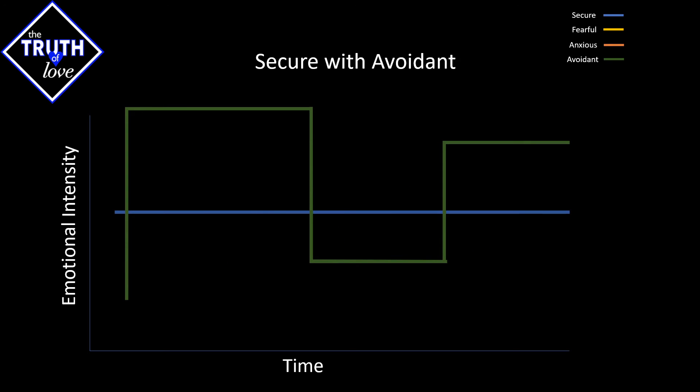Dismissive avoidance also follow a similar pattern, but like their counterparts or unlike their counterparts, their drop in interest usually is sparked by a trigger. So that trigger might not necessarily be directly associated with the secure attachment style. That trigger might be an external factor, but that external factor has an immediate impact on how the dismissive avoidance sees the individual that's secure.